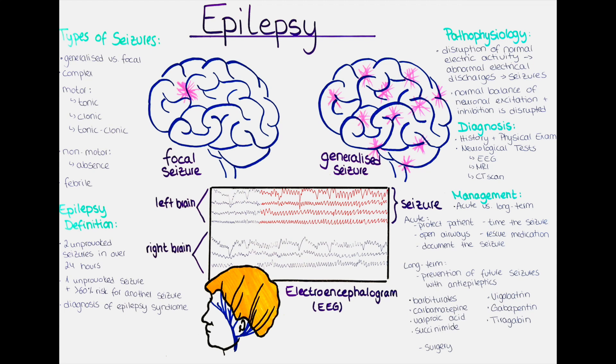Living with epilepsy can be challenging both for those affected and for their families and caregivers. Epilepsy can impact many aspects of daily life, from driving restrictions to social stigma, and managing the condition requires ongoing attention and care. Research into epilepsy is ongoing, with a focus on developing better treatments and improving quality of life. While there is no cure, advances in medical research have led to significant improvements in the management of seizures.